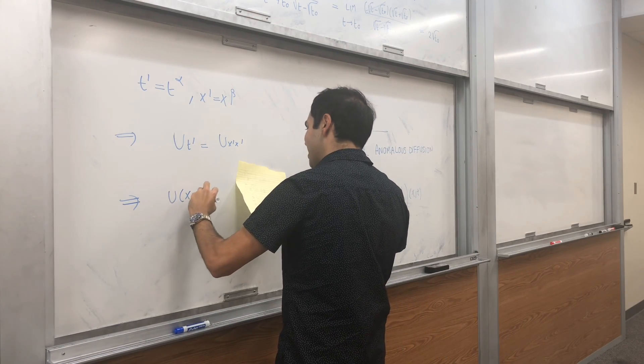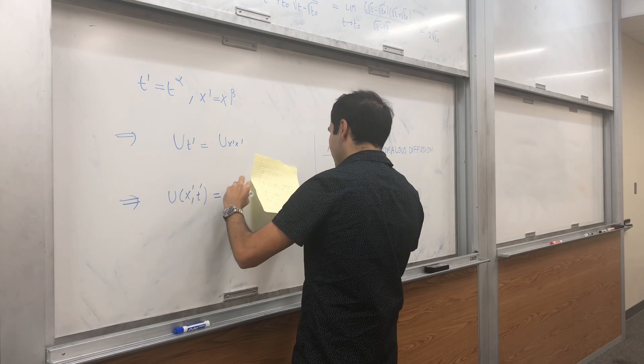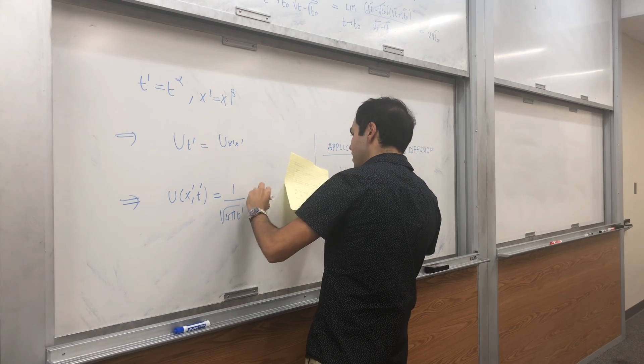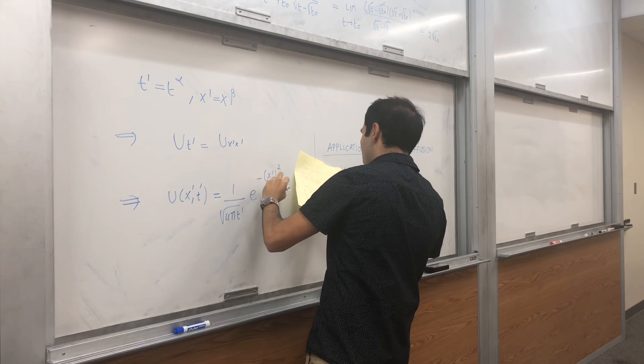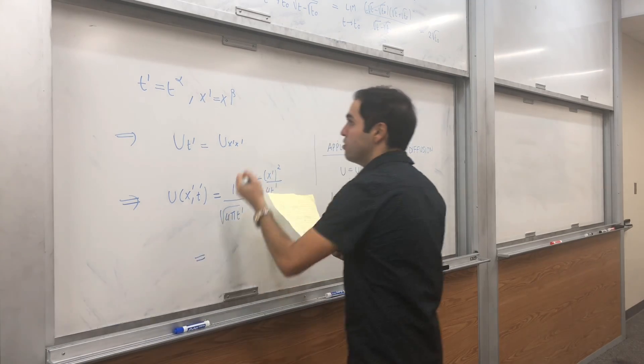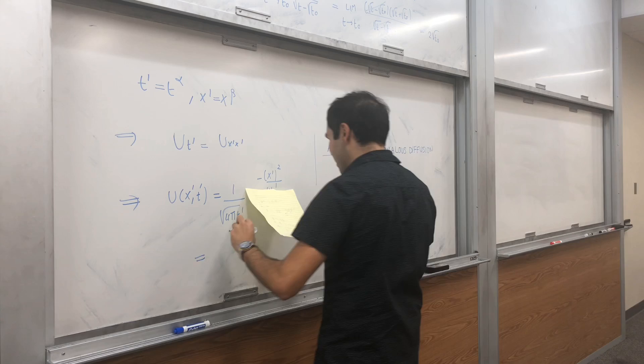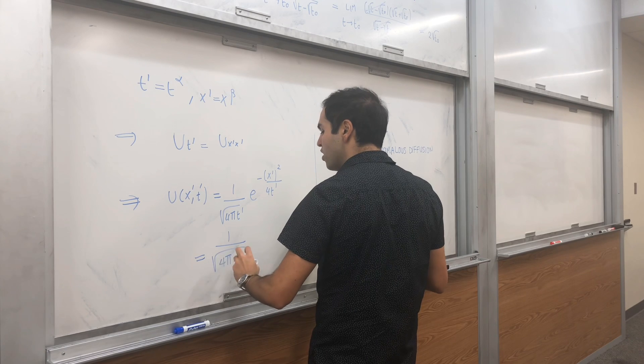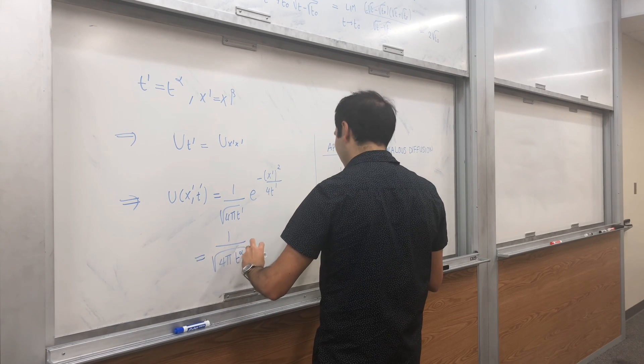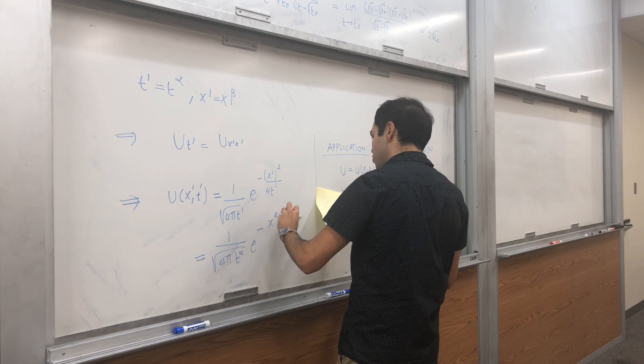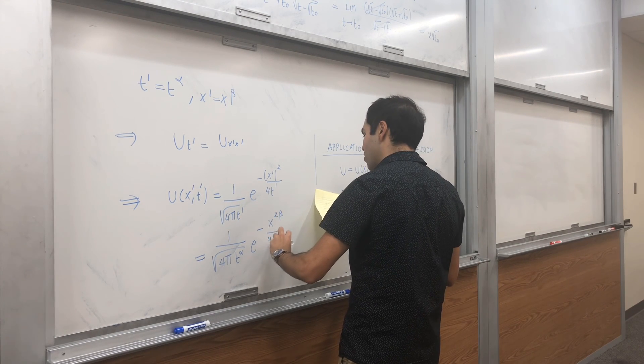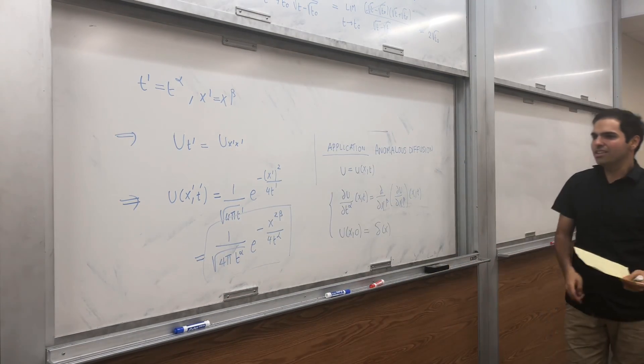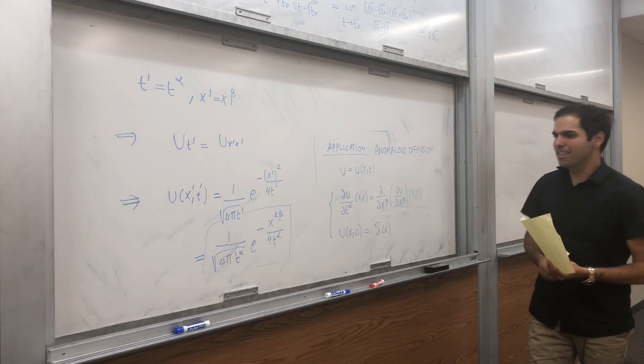which is simply u x t. So, u x prime t prime equals 1 over 4 pi t prime e to the minus x prime squared over 4 t prime. And then just, if you turn it into alpha and beta, if you turn it into t and x, it becomes 1 over square root of 4 pi t to the alpha e to the minus x to the 2 beta over 4 t to the alpha. And there you go, it gives you the solution to your anomalous heat equation.